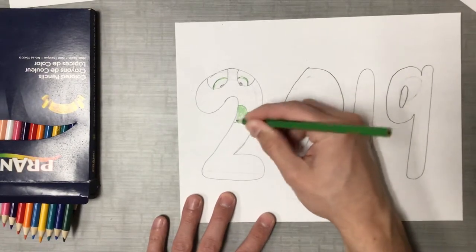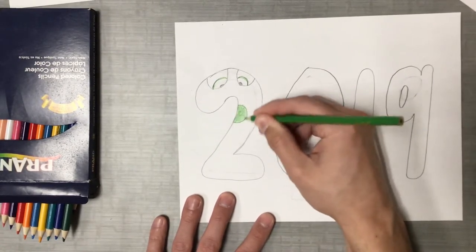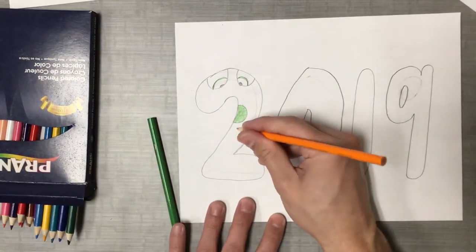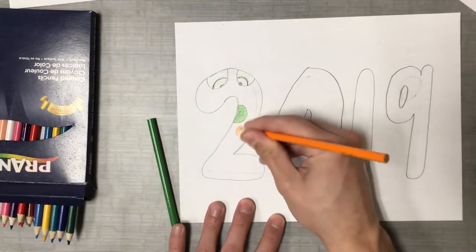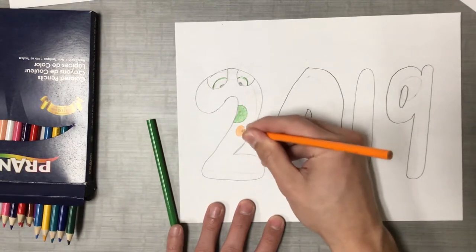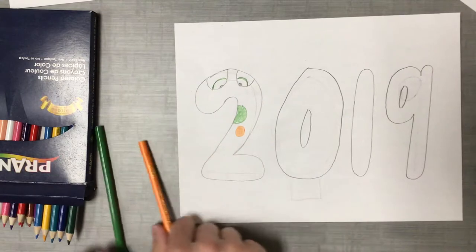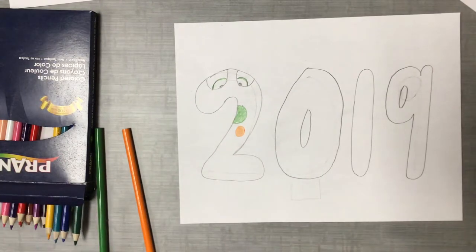You could do zigzags or stripes. Stripes look really nice. So you can see here I'm doing different colored polka dots on the two. But I want you to take your time. Make sure that you color it in nice and neat. Notice I'm not putting down one color without finishing the coloring.